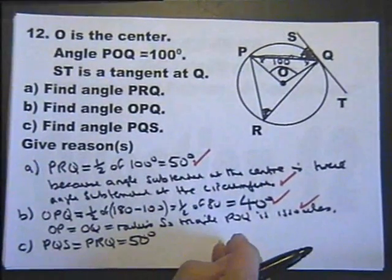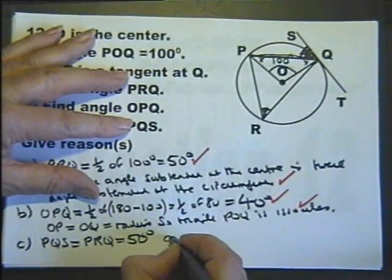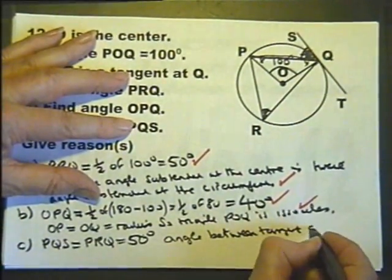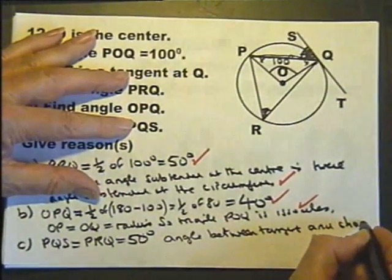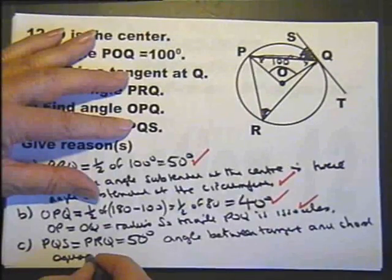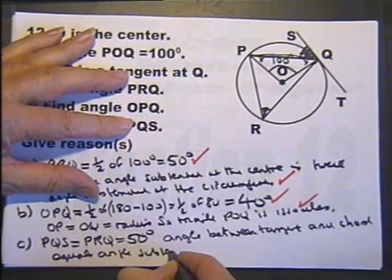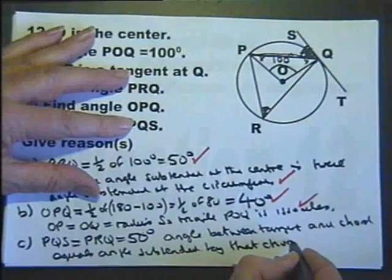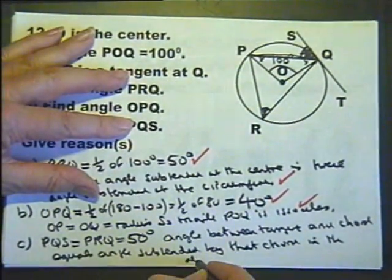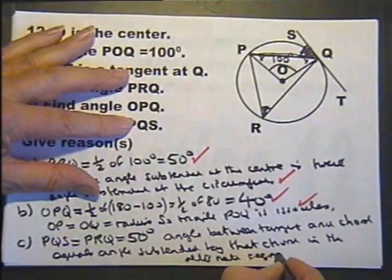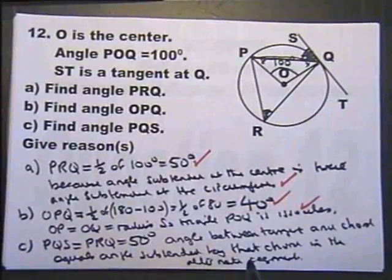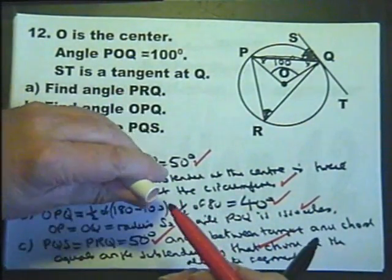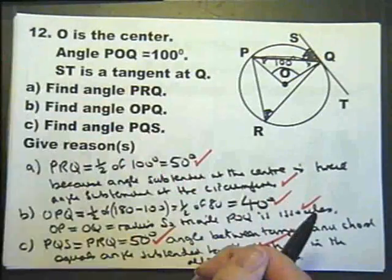So PQS equals the answer to part A, which is 50 degrees. But same as before, I need the reason as well: angle between tangent and chord equals angle subtended by that chord in the alternate segment. You might get away with just saying the alternate segment theorem, but if you can say the whole thing or something similar, so much the better. Question 12 complete.